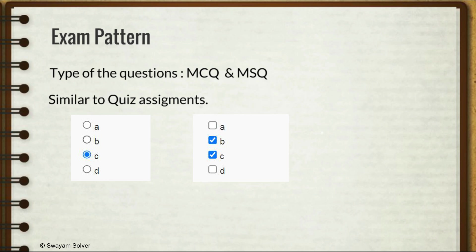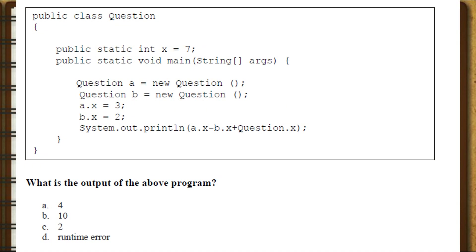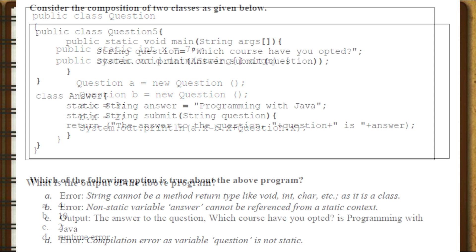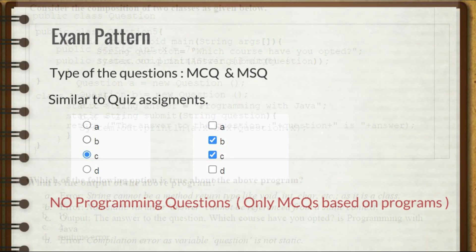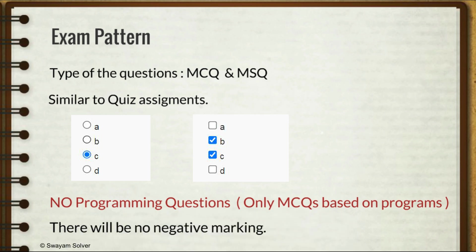There won't be any programming assignment type question. There is no need of coding, all you need to do is select options. But there would be objective questions based on Java programs similar to what you see in your weekly quizzes. You will be given a Java program and you have to find out the output of this program or what are the errors in the program. There will be no negative marking, so don't leave any question unattempted. At least attempt each and every question.